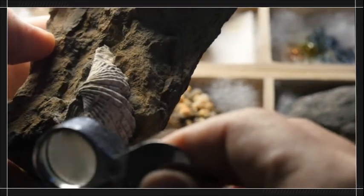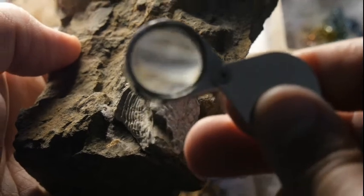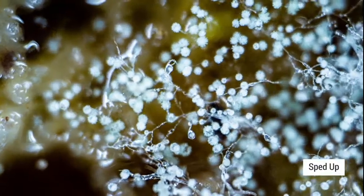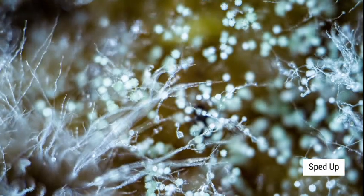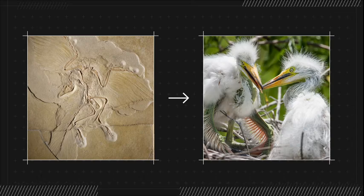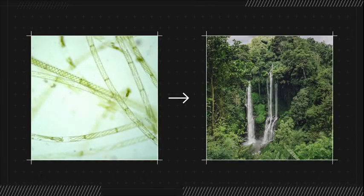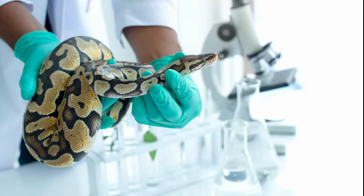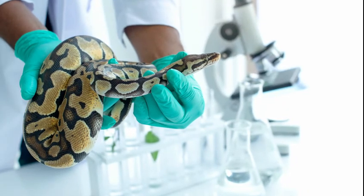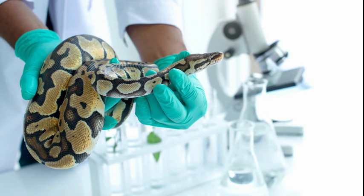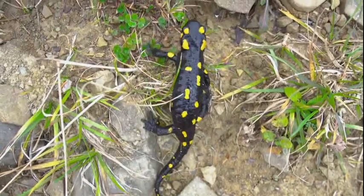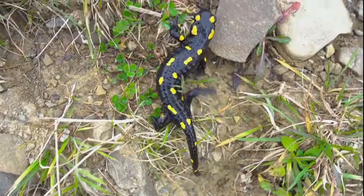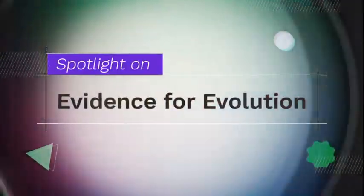The history of life on Earth is full of mysteries. But modern science has uncovered amazing connections between living things. Birds descended from two-legged dinosaurs. All land plants came from water-dwelling algae. And the ancestors of snakes had legs. Scientists discovered all of these relationships and more with the help of different kinds of evidence for evolution. It's time to shine a spotlight on evidence for evolution.